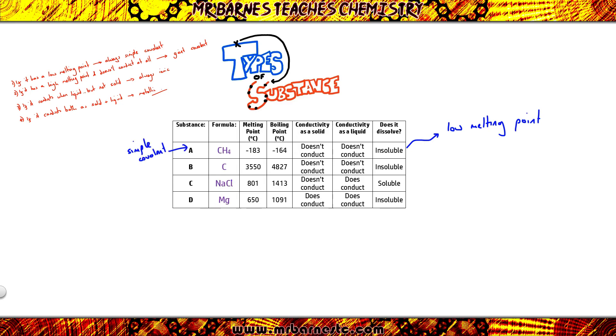Substance B, it's got a high melting point and high boiling point so we know it's not simple. We then look at the conductivity. It doesn't conduct as a solid. It doesn't conduct as a liquid. Therefore, it has got to be giant covalent.